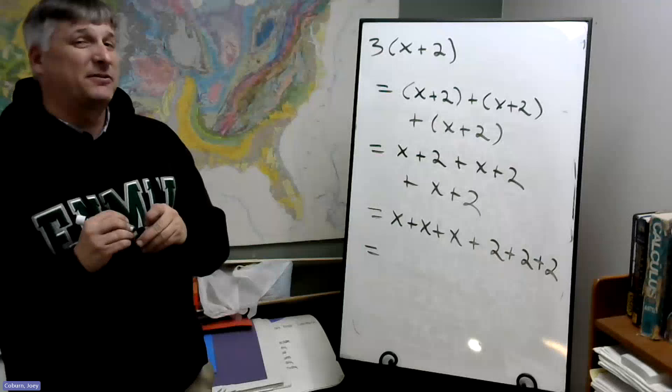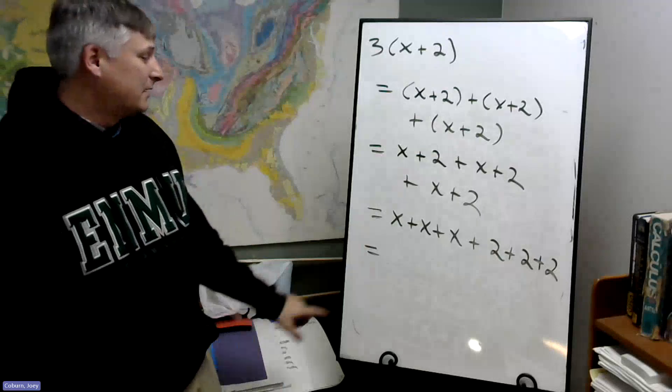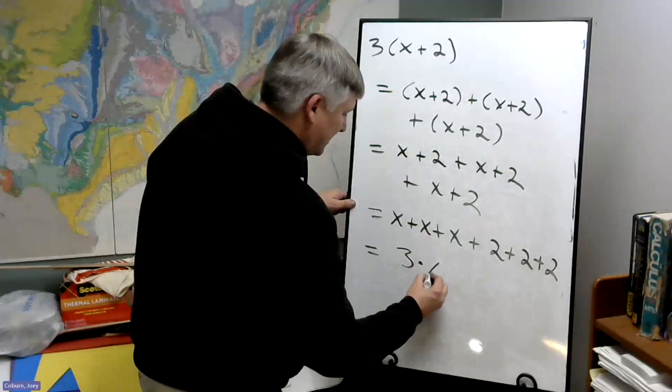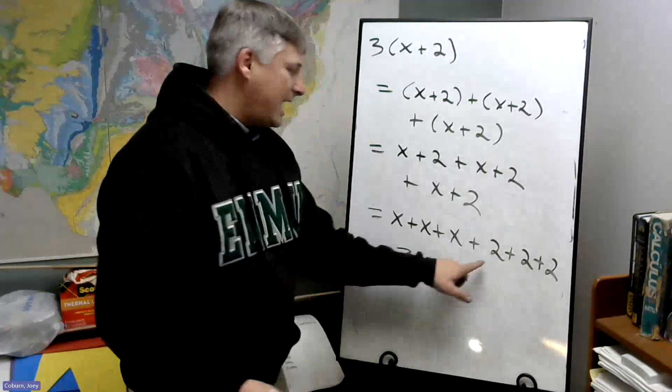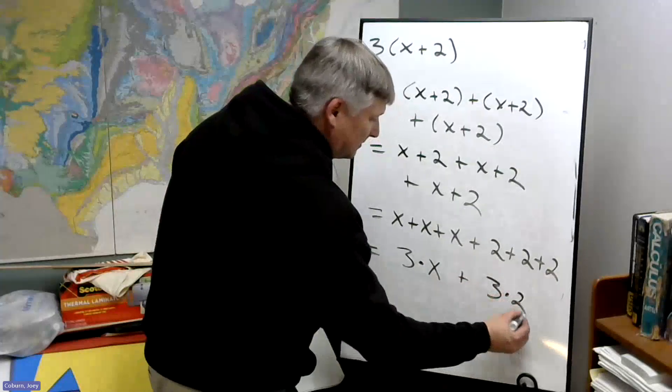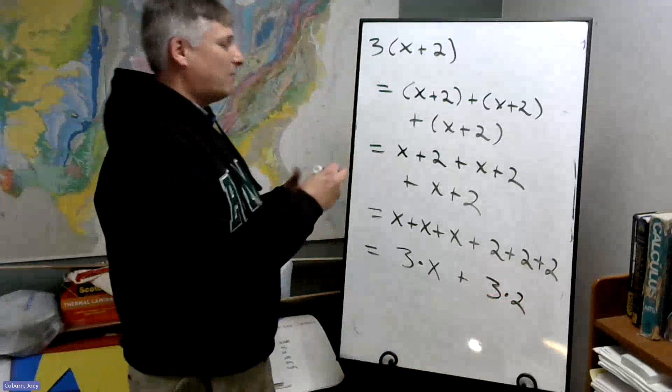And now let's use that definition of multiplication again. If you add 3 x's together, that's the same as 3 times x. Add 3 2's together, it's the same as 3 times 2.